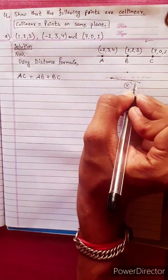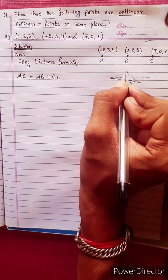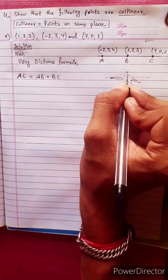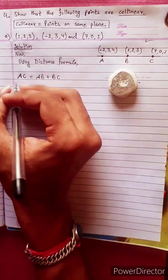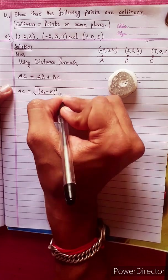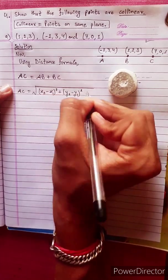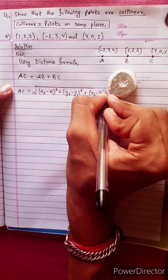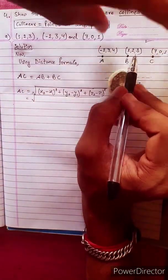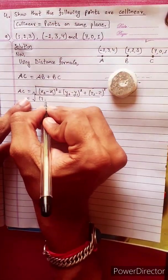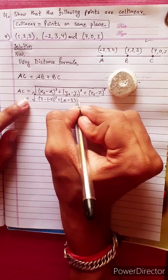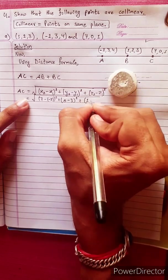The SQ length is equal to RK. Right angles are also equal to RK angles. Now let's check it: the distance formula is square root of (x2 minus x1) squared plus (y2 minus y1) squared plus (z2 minus z1) squared. x2 is 7, x1 is minus 2, y: 0 minus 3, z2 minus z1 equals 1 minus 4.